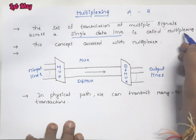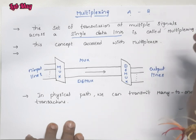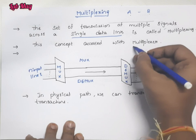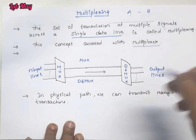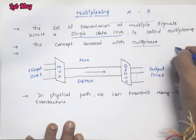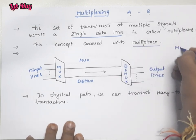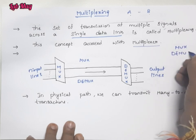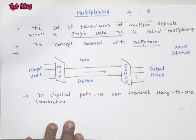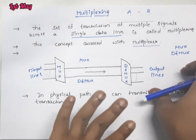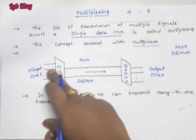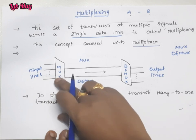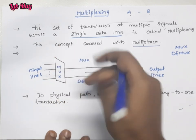Multiplexing involves two devices: the first one is the multiplexer and the second one is the demultiplexer — MUX and DEMUX for short. On the sender side, we have n input lines, and input lines are nothing but senders.